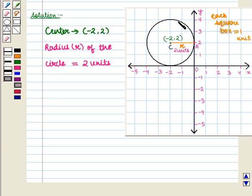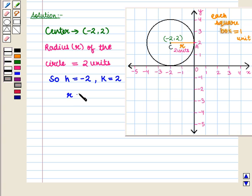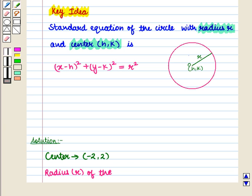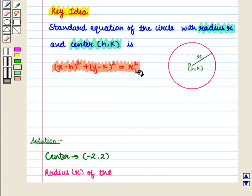Now we shall write the equation of this circle, where the center is given by the ordered pair minus 2, 2. So here the value of h is minus 2 and the value of k is 2. Also the radius is given by 2 units, so r is equal to 2. From the key idea, the standard equation of the circle with radius r and center having coordinates h, k is given by: x minus h whole square plus y minus k whole square is equal to r square.